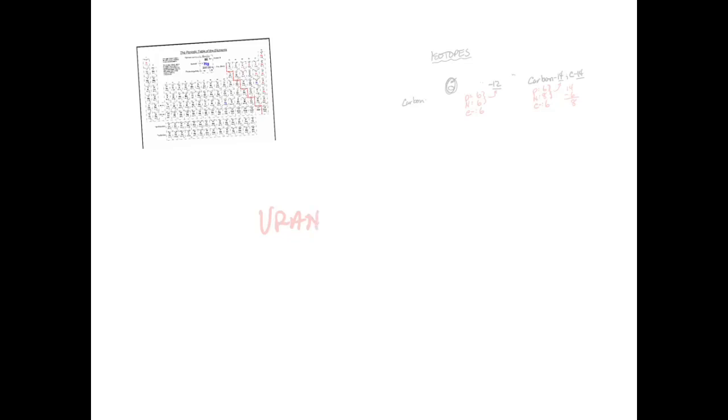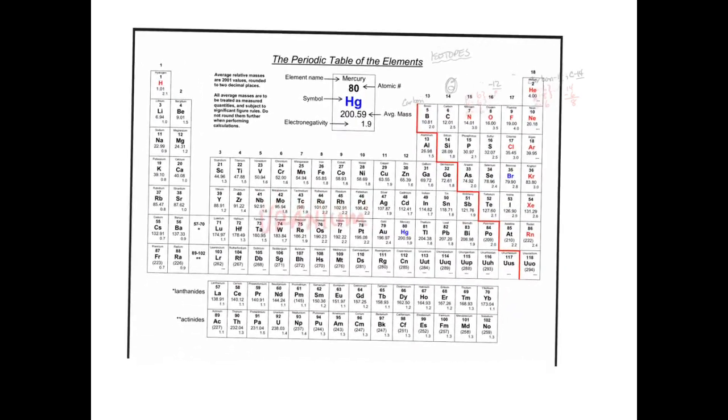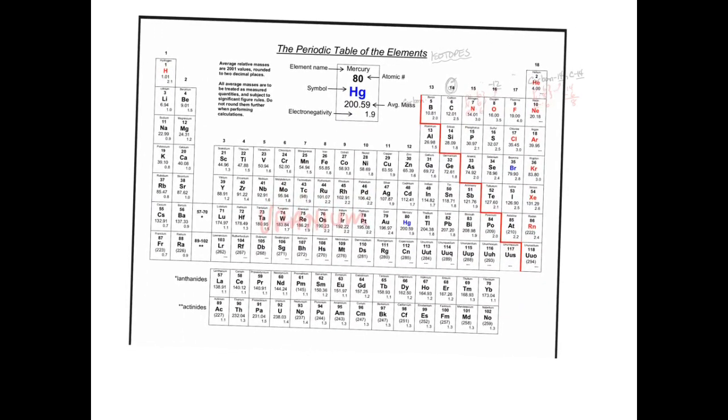Uranium on the periodic table is down in the very bottom, right down here in the actinides. Uranium's got an atomic number of 92, and its average atomic mass is 238.03. That means that the most common isotope of uranium has a mass of 238.